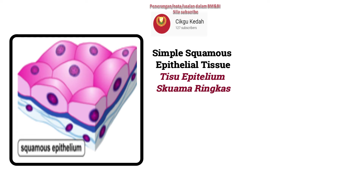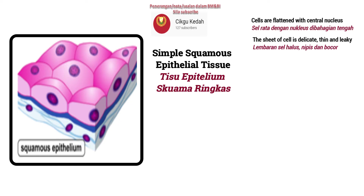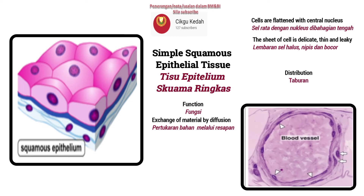Simple squamous epithelial tissue — cells are flattened with a central nucleus. The sheet of cells is delicate and thin. The function of simple squamous epithelial tissue is exchange of material by diffusion. Distribution: lining of blood vessels.